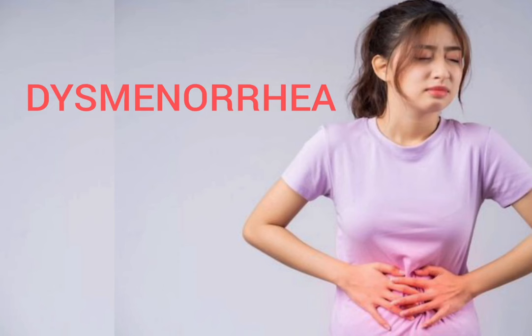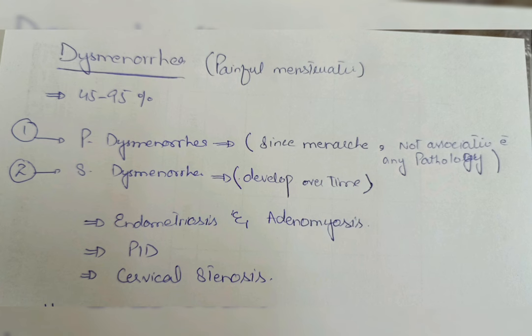Assalamu alaikum everyone, how are you all? Today's topic is Dysmenorrhea. First of all, we define Dysmenorrhea as it is painful menstruation that affects almost 45–95% of females in the reproductive age group.